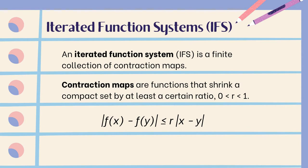The Iterative Function System, IFS for short, is a finite collection of contraction maps. Contraction maps are functions that shrink a compact set by at least a certain ratio from 0 to 1. We will be using this formula to help determine the pattern repeating for the Sierpinski Gasket.